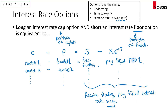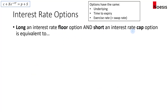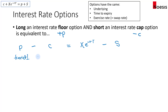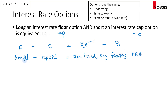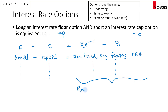Keep in mind that a swap is a package of forwards. Now for a long interest rate floor and a short interest rate cap — a long floor and short cap — that would be equivalent to the risk-free bond minus the underlying. The floor is a portfolio of floorlets, and the cap is a portfolio of caplets. That is equivalent to a receive fixed, pay floating FRA. So for that series of floorlets and caplets, there will be a series of receive fixed, pay floating forward rate agreements, and that whole package of forwards will be equivalent to a receive fixed, pay floating interest rate swap.